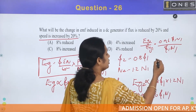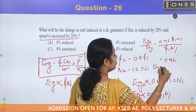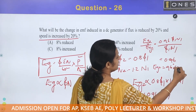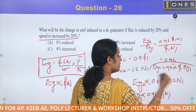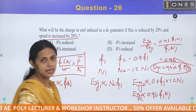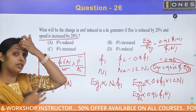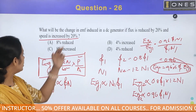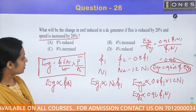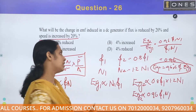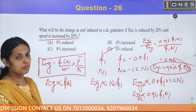EG2/EG1 = 0.96, meaning EG2 is 96% of EG1. That is a 4% drop. The new generated voltage is reduced by 4%. Option D is the correct answer.